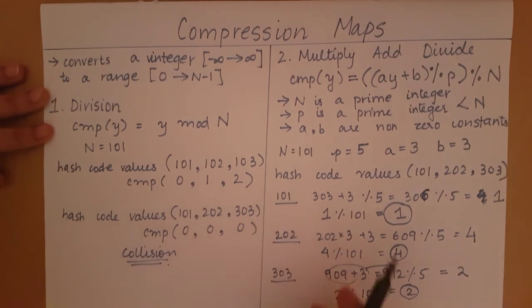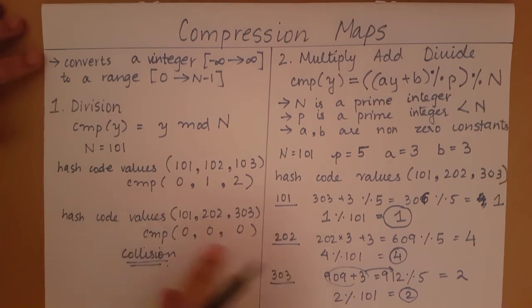In this way, we have reduced the collisions of this particular case. So these are the two compression maps, out of which multiply-add-divide will cause less collisions, so it is more preferred.